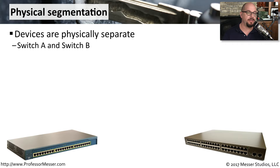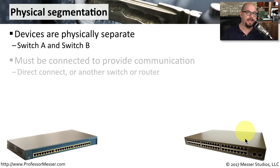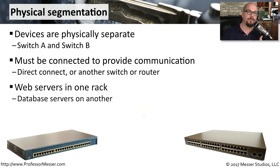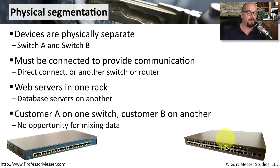If we create physical segmentation, then we have completely separate devices. We might have Switch A and Switch B, and these devices do not communicate with each other directly. We would have to put an additional connection between these devices, or some type of intermediate switch or router, to provide any communication between Switch A and Switch B. We might create this physical segmentation to have all web servers in one rack and all database servers in another rack. Or we might have Customer A on one switch and Customer B on another switch, and we want to be sure that the data between those customers never intermixes.